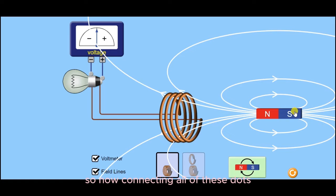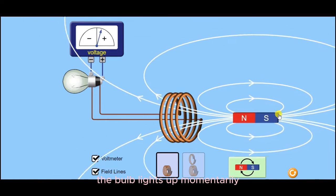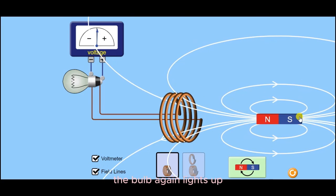So now connecting all of these dots, if this magnet is moved towards this coil of wire, the bulb lights up momentarily. If the magnet is brought back, the bulb again lights up, indicating that there's an EMF induced in the coil of wire if the magnetic flux through the coil of wire changes.